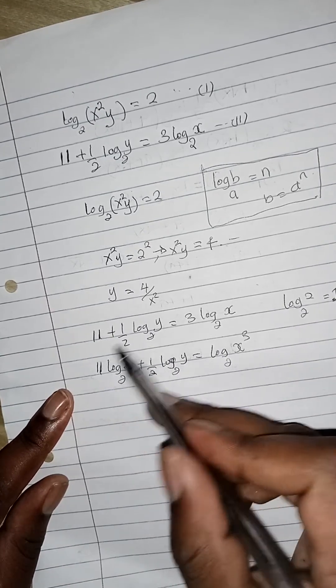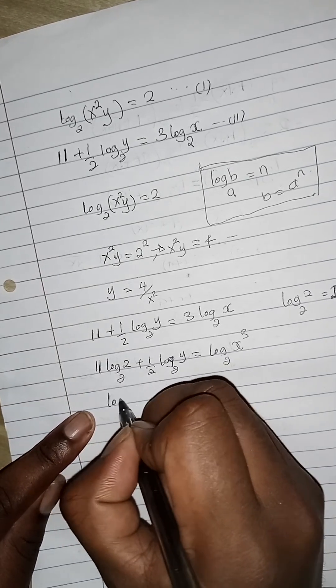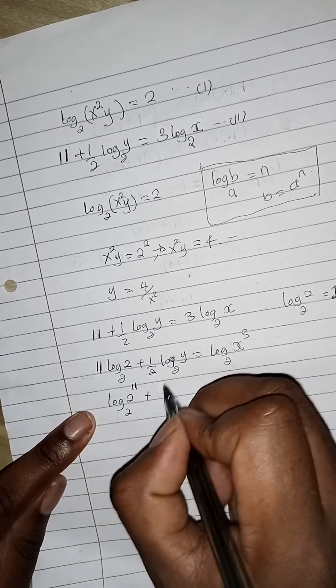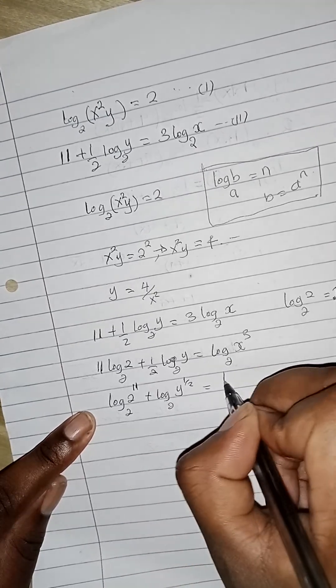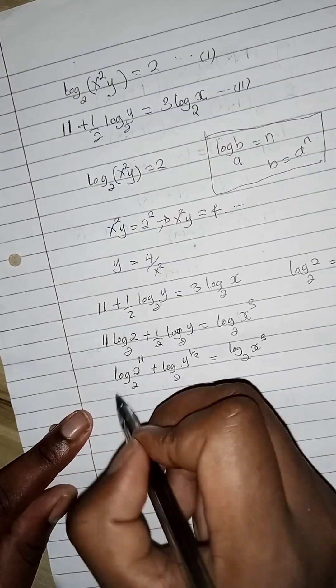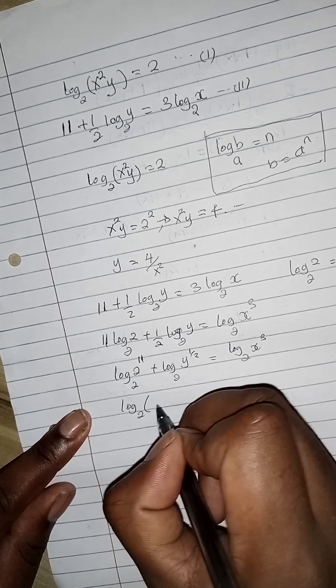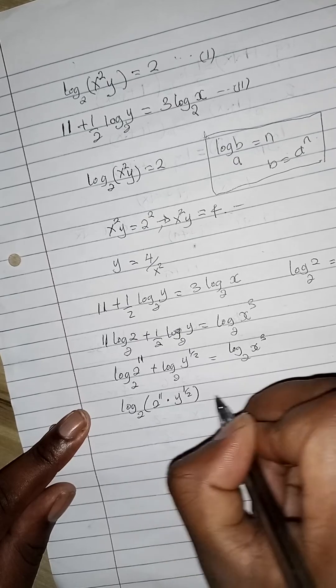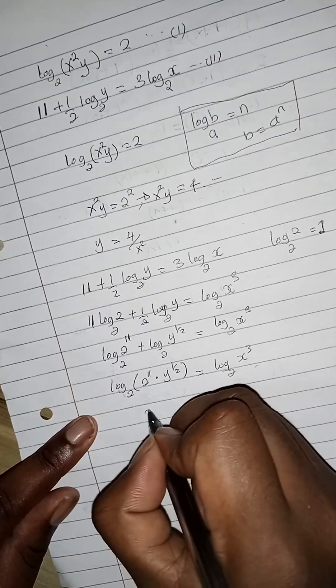Now we can use the product rule: log to base 2 of 2 raised to power 11 plus log to base 2 of y raised to power half equals log to base 2 of x cubed. The bases are the same, so we can drop the base.